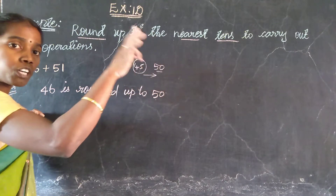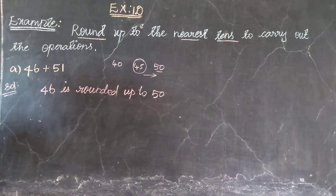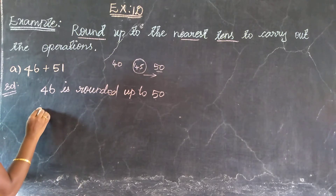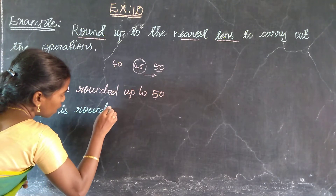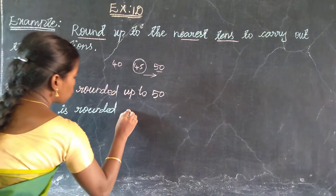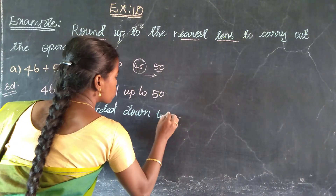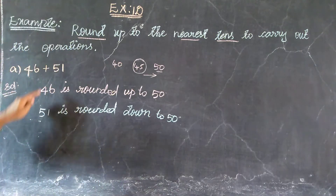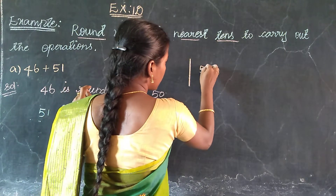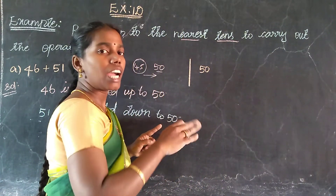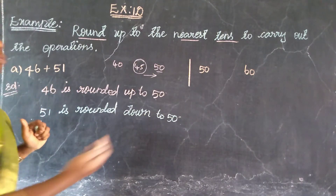Next value is 51. The tens place base gives a starting value of 50 and an ending value of 60. The value 51 is in between 50 and 60. 51 is rounded down to 50.